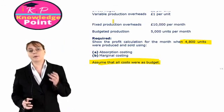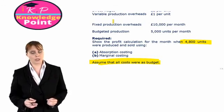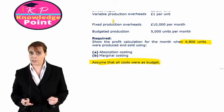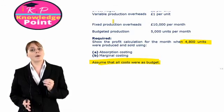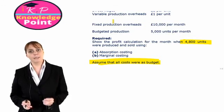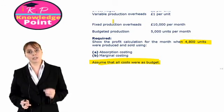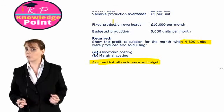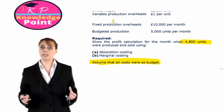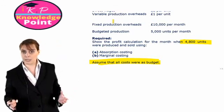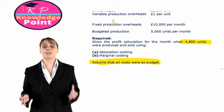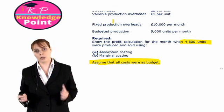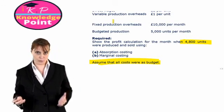Now we're going to do our absorption costing profit calculation first. However, we're going to begin by considering our complication. In other words, first we are going to look and see whether during the period we had any under or over absorption.